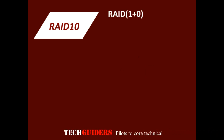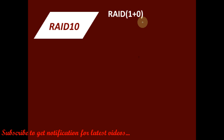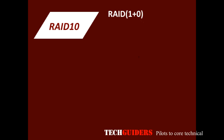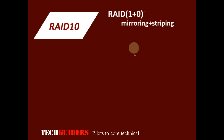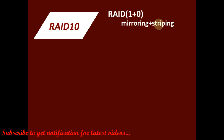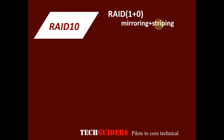RAID 10 is a combination of RAID 1 and RAID 0. Hence, it is one of the nested configurations which combines two or more basic RAID levels. RAID 1 uses mirroring in which data is written to two or more disks at the same time, and RAID 0 uses striping in which data is broken into chunks and written successively to different disks.